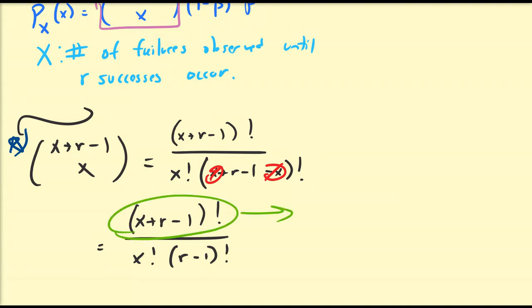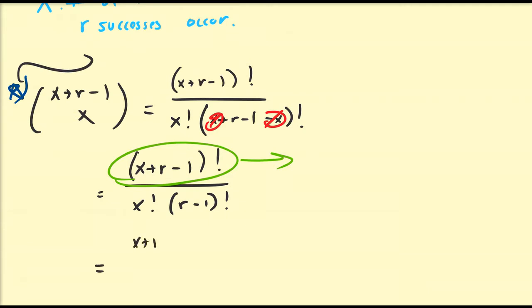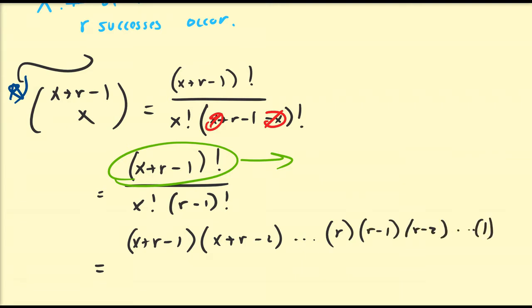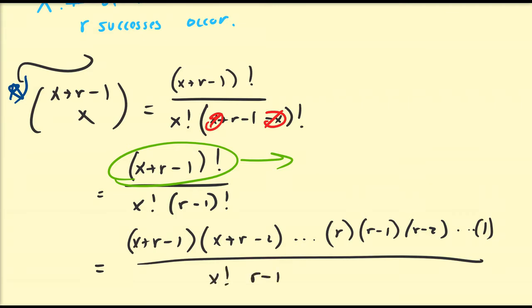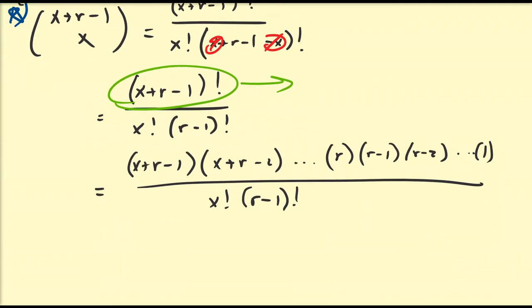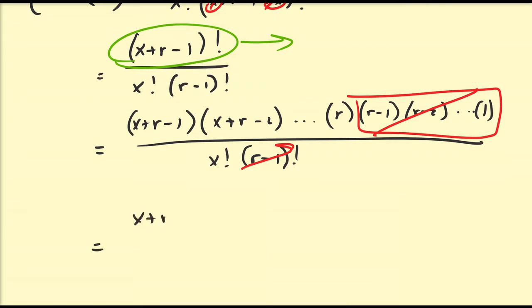Now I want to expand this in terms of its product terms. That's going to be (x+r-1)(x+r-2)···r·(r-1)···1 all over x!. You may see why I want to expand downwards — it's left as an exercise to show that x+r-1 is always greater than r-1, which is easy to see since x is non-negative. So the (r-1)! in numerator and denominator cancel, leaving (x+r-1)(x+r-2)···r all over x!.